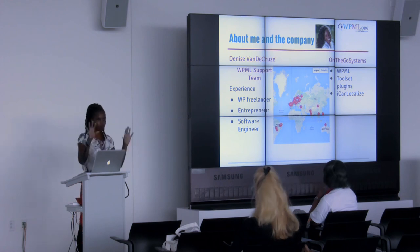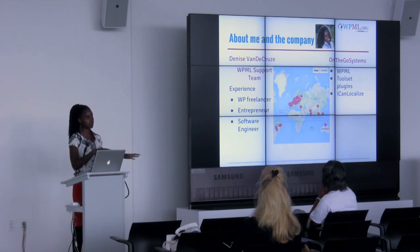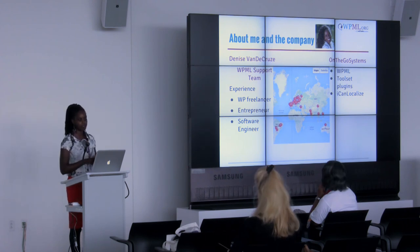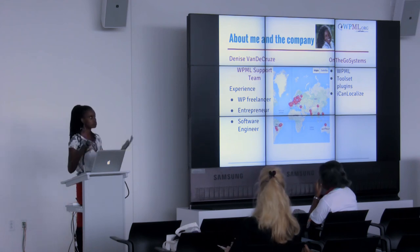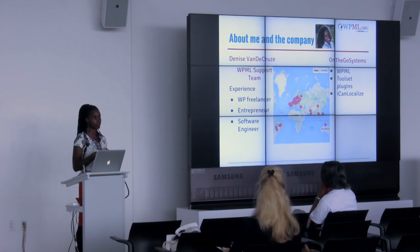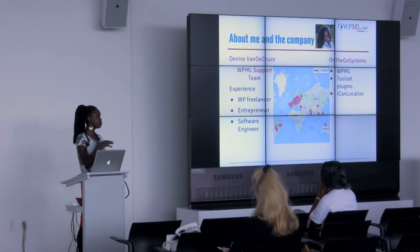Those are plugins that sit on top of WordPress. WPML in particular helps make WordPress multilingual. All of those dots on the map are where you'll find OnTheGo Systems employees — we have no physical location. We're all over, and usually our employees' first language is not English. So we're a very mobile and multilingual company.